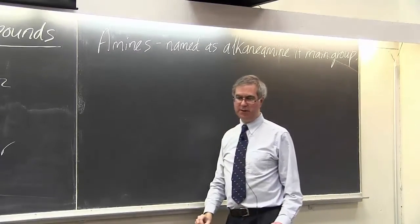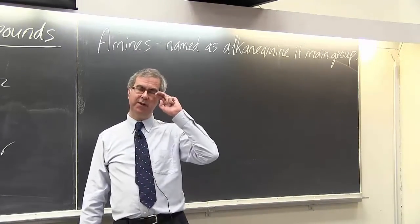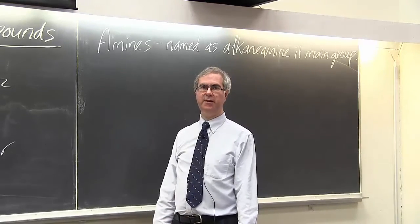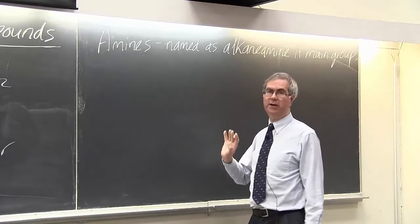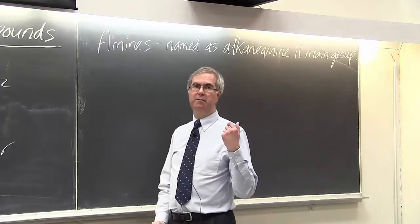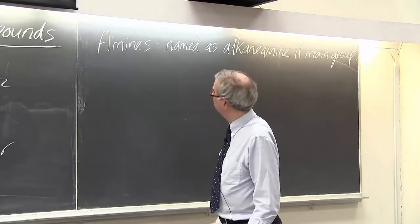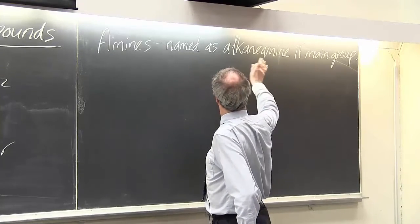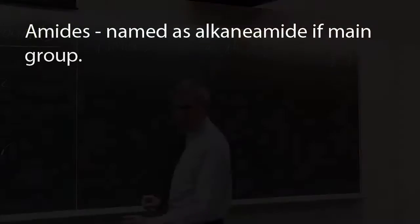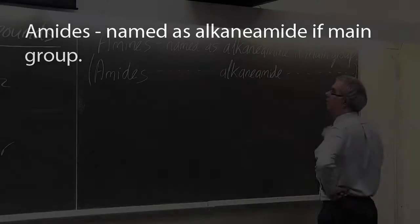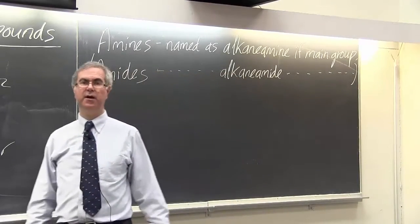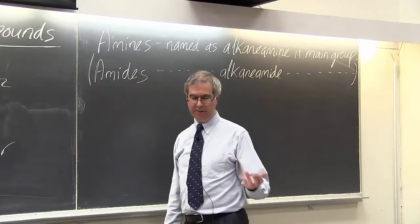So how do you name these kinds of things? You would name this something like methanamine, ethanamine, propanamine, things like that. But for the systematic IUPAC name, it's named like propanamine and so on. And amides are actually named in a similar way. So you'd have ethanamide, propanamide, things like that.